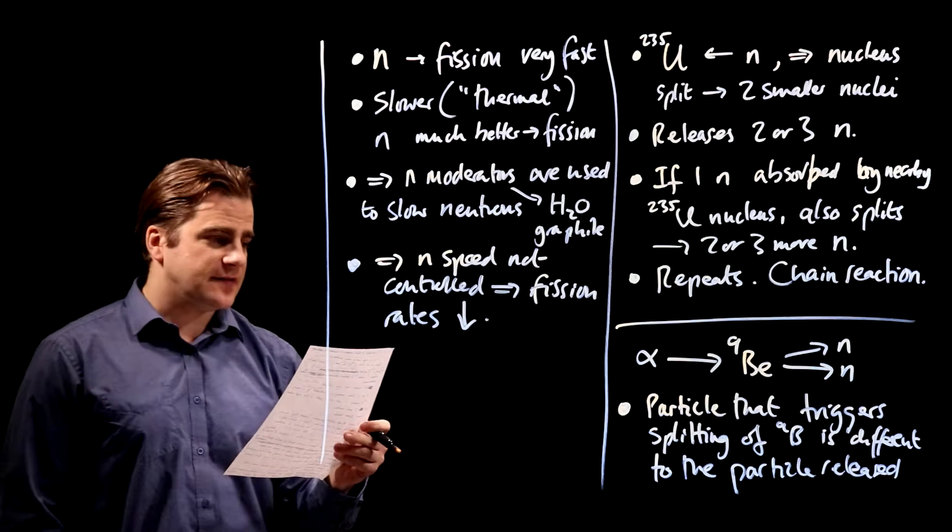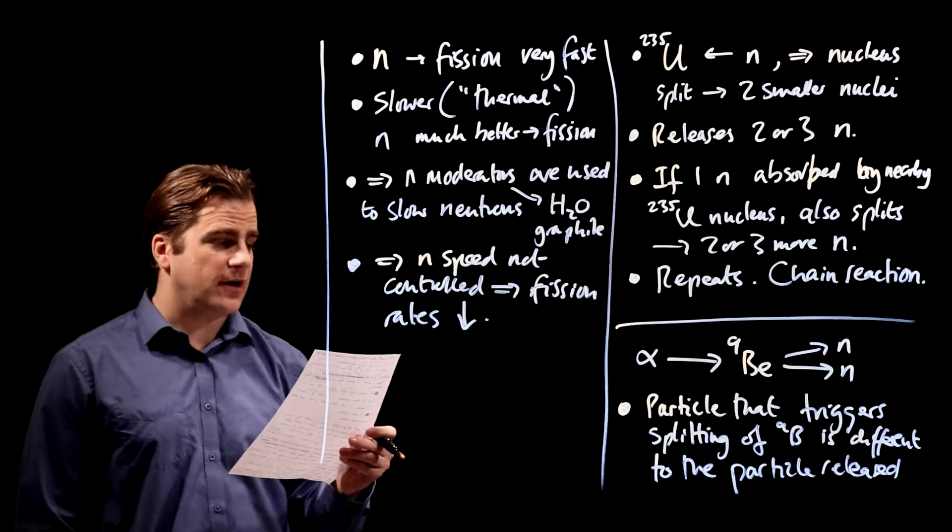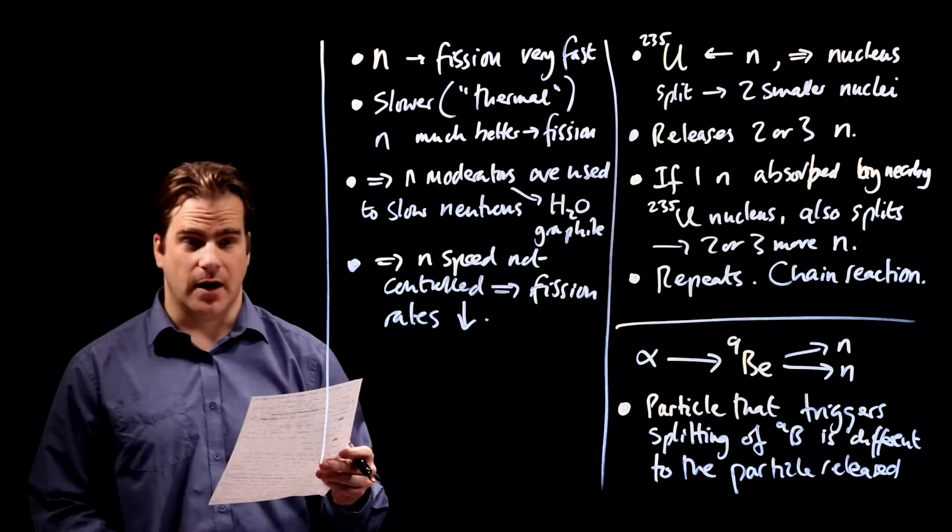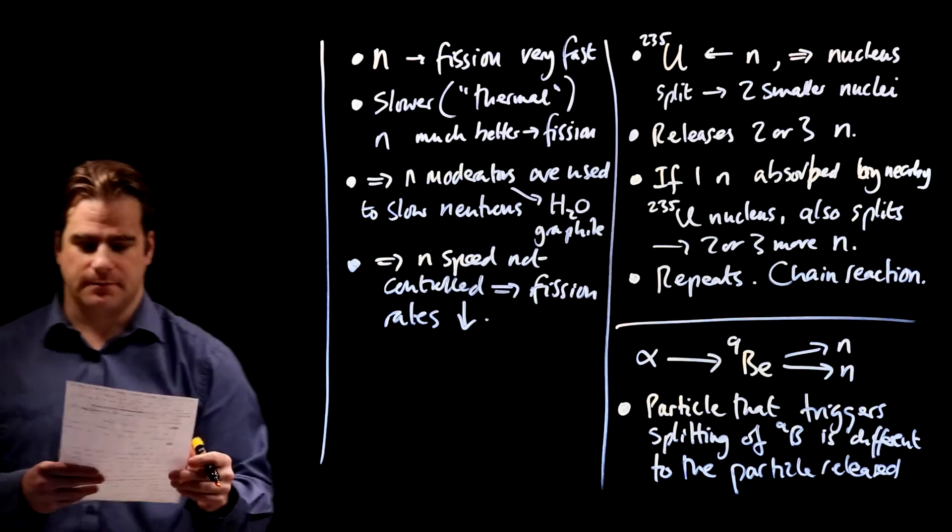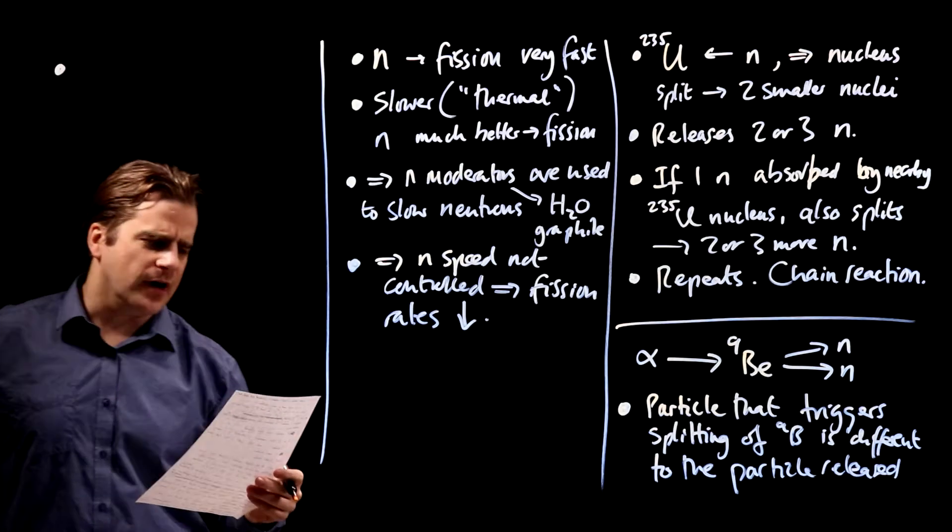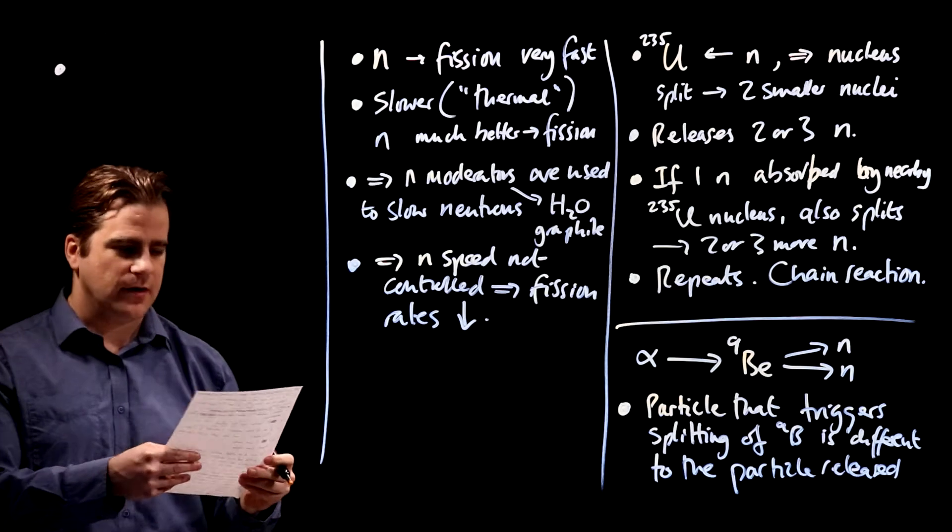Describe how the energy released in the chain reaction in a nuclear reactor is used to drive a turbine in a nuclear power station. Three marks. Let's go.